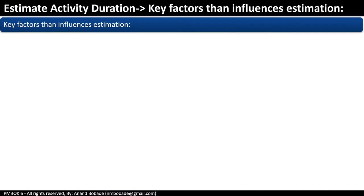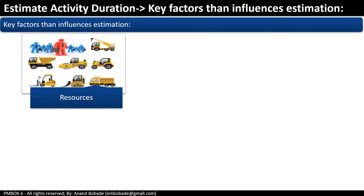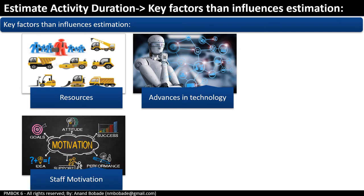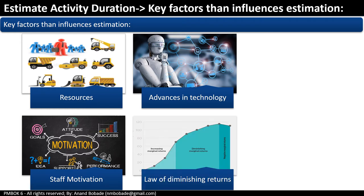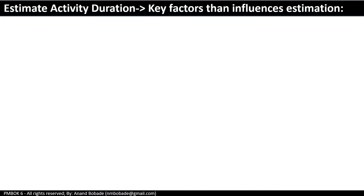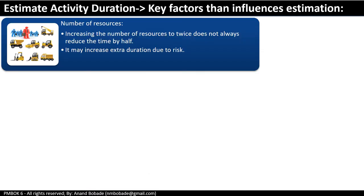Before getting into estimation details, it is important to understand the factors that can influence estimation. Factors include number of resources, quality of resources, advances in technology, staff motivation, and the law of diminishing returns. Regarding number of resources: the general perception of management is to add more resources to reduce the timeline. However, increasing the number of resources to twice does not always reduce time by half — sometimes it may actually increase duration due to added risks.